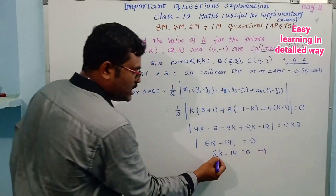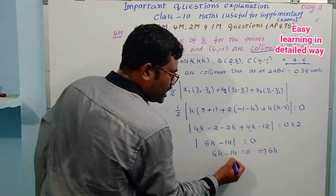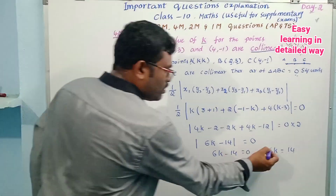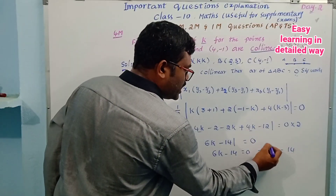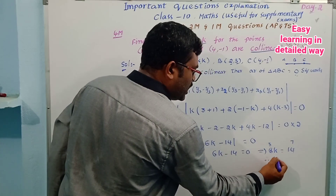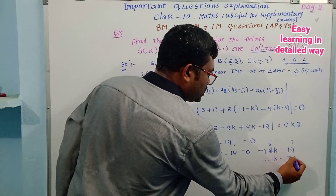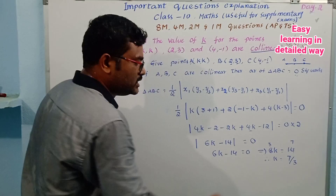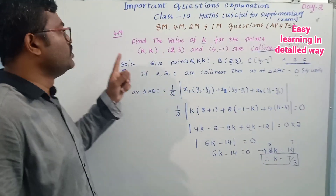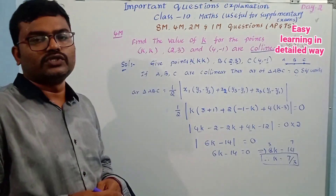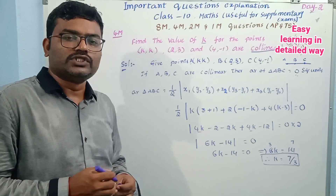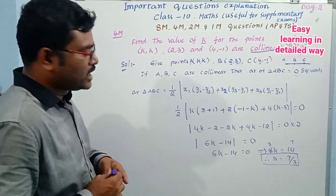Therefore k is equal to 7 by 3. So even now, we will find the k value. This is the most important four-mark question. Of course, from an examination point of view, it is very important. This is the most important — practice it fully.